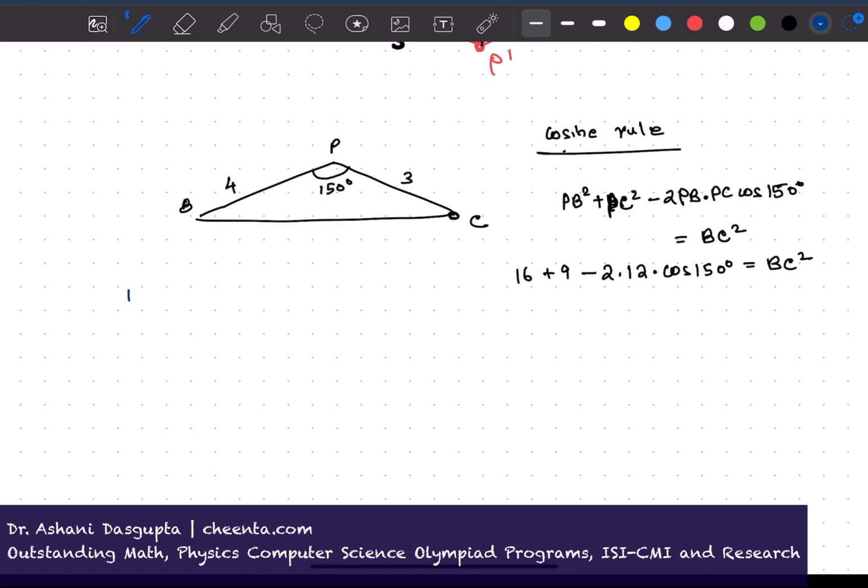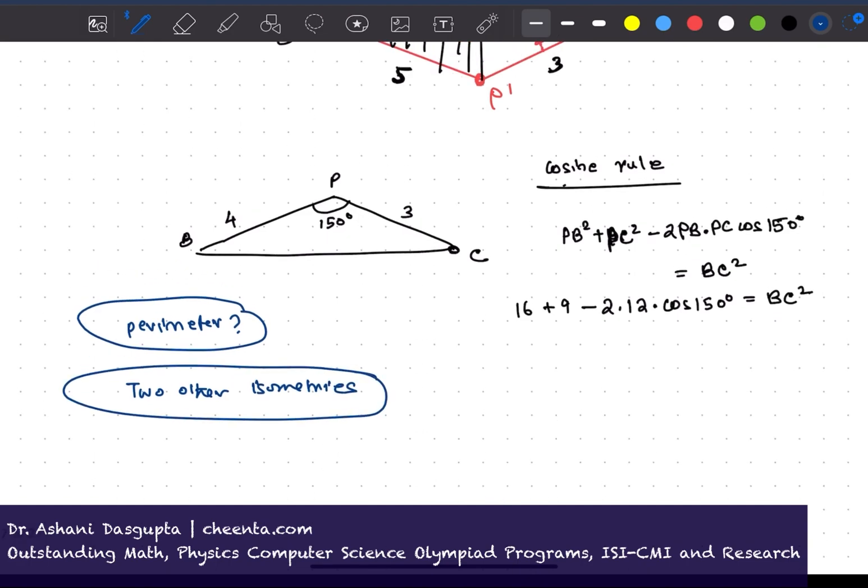So the problem is almost done. I just want to ask you, what is the perimeter? Can you put the value of the perimeter in the comment section? Let me know if you like this problem and if you can name two other isometries of the Euclidean plane. Please let me know about them as well. Give it a try and I will see you in the next video. Thank you for watching.